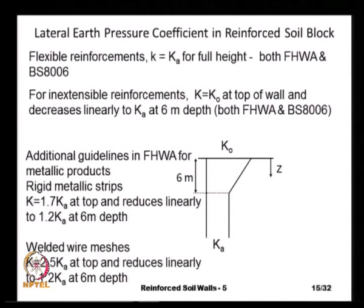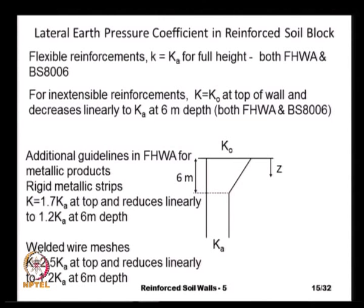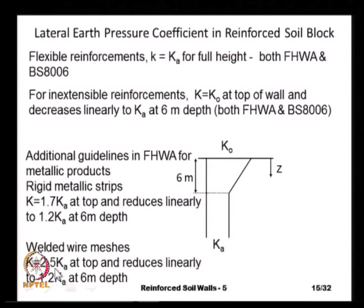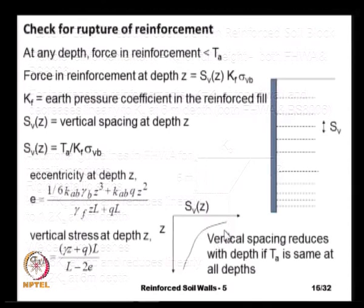The reason for the higher pressures near the top is that metallic strips, being much stiffer than the soil, prevent lateral deformation of the soil, so the actual earth pressure does not decrease to K_a. The very high pressures at the top also account for heavy compaction — inextensible reinforcements do not allow the soil to expand laterally during compaction, whereas polymeric reinforcements allow sufficient deformation so that earth pressures reduce to K_a. For welded wire meshes, K is 2.5 × K_a at the top, reducing linearly to 1.2 × K_a at 6 meters depth, and constant at K_a below 6 meters.